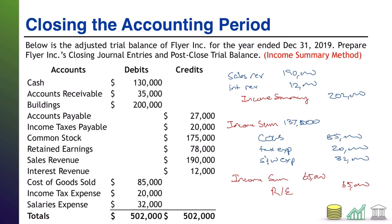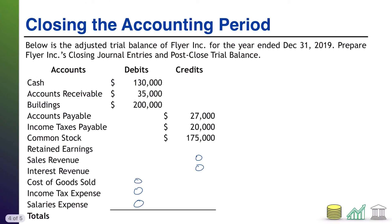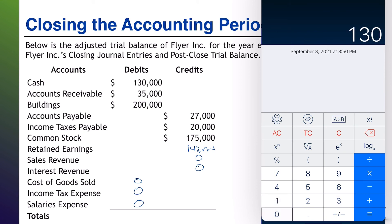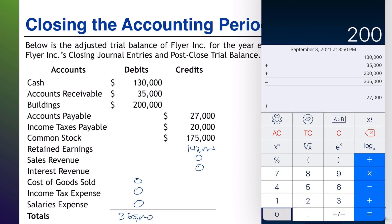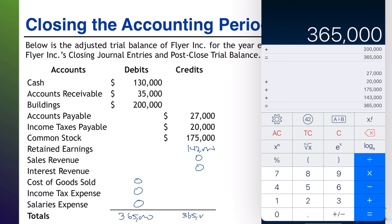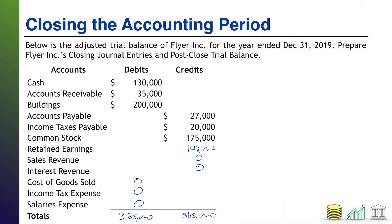Remember, as part of this process we did update retained earnings — it's $65,000 higher than it was before. It used to be $78,000, so that bumps it up to $143,000. And as with every other trial balance, you aren't done until you tally up your debits and credits and ensure they are still equal. Debits: $130,000 plus $35,000 plus $200,000 equals $365,000. Credits: $27,000 plus $20,000 plus $175,000 plus $143,000 also equals $365,000. Debits and credits are equal — we are complete with our post-close trial balance and ready to start a new accounting period.